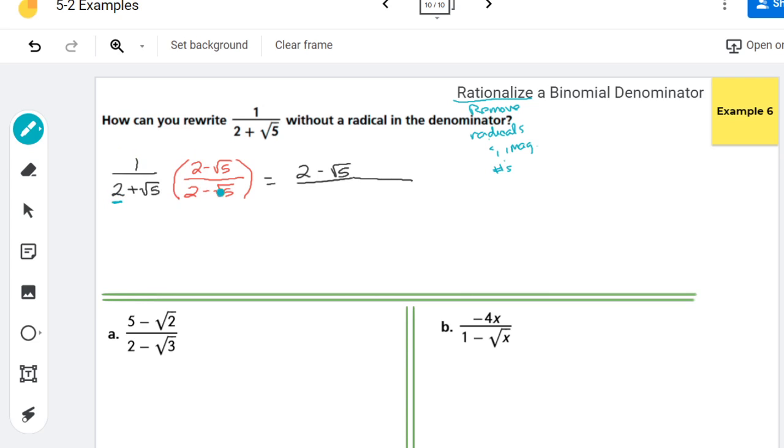So I'm going to take the 2 and times it to each of these. So 2 times 2 is 4, and 2 times negative root 5 is negative 2 root 5. I'm doing the same thing with the root 5 here. So the square root of 5 times 2 is 2 root 5. And the square root of 5 times the negative square root of 5 is negative 5.